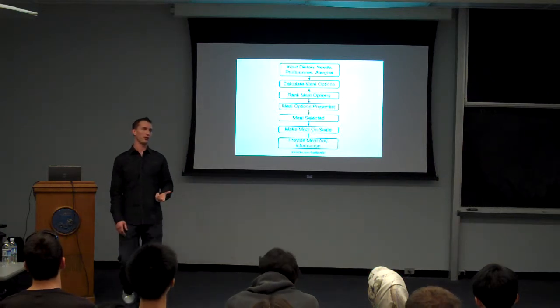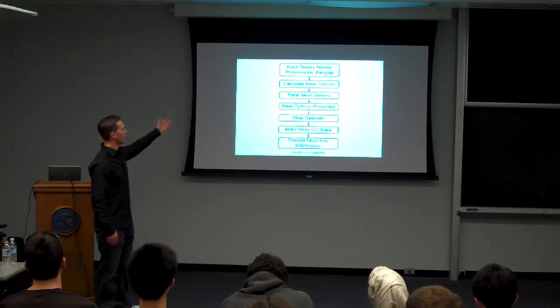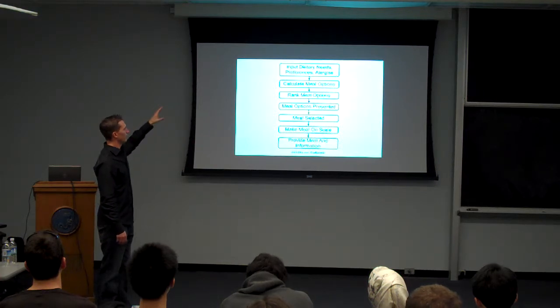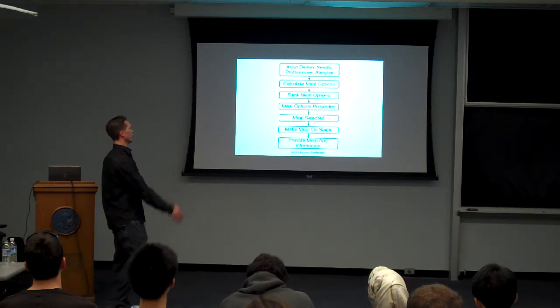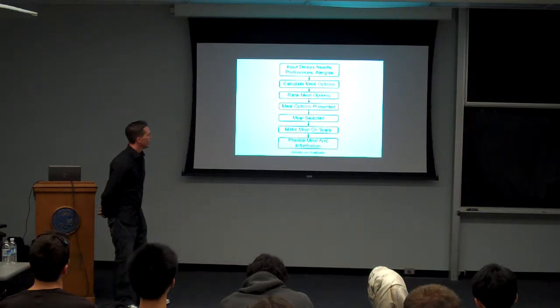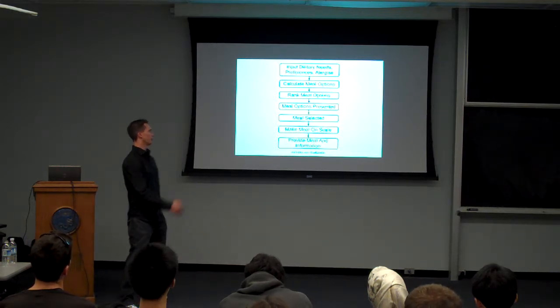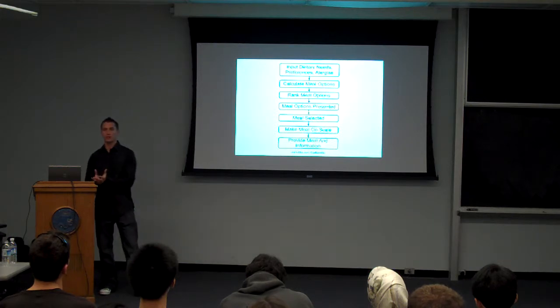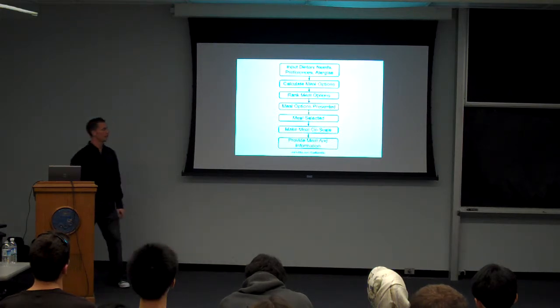And we write a process down. This would be part of our disclosure. We would put it in our disclosure document. You would have this method. You would have dietary needs. You would calculate options. You would rank them. Likely, you would present them to the user. They would select one, and you would make the meal on a scale, and then you would provide the meal with the information for the user.